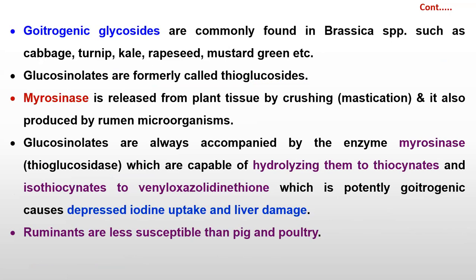Goitrogenic glycosides are commonly found in Brassica species, such as cabbage, turnip, rapeseed, mustard, and other Brassica plants. Glucosinolates, which are commonly called thioglycosides, are present in mustard or rapeseed. One enzyme known as myrosinase, which is released from plant tissue by crushing, when the animal consumes that plant tissue or masticates it, then myrosinase is released.